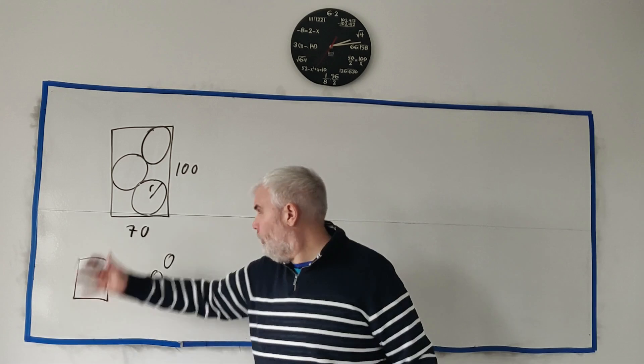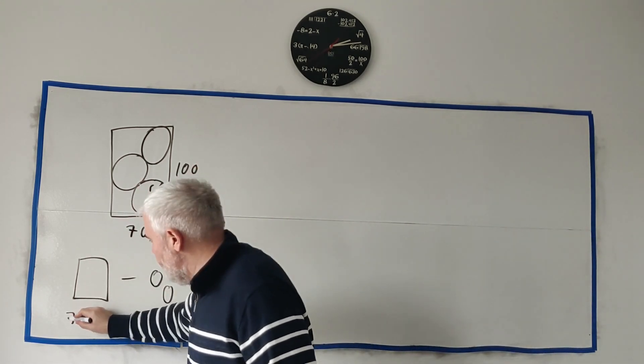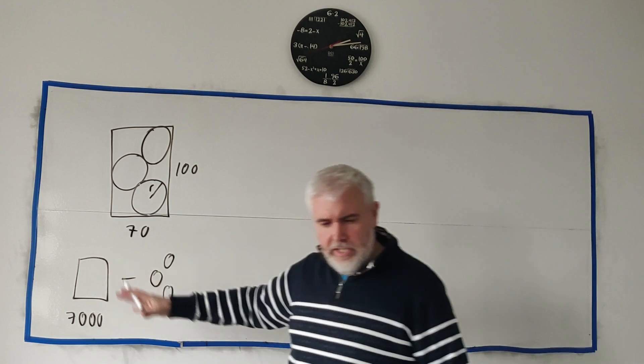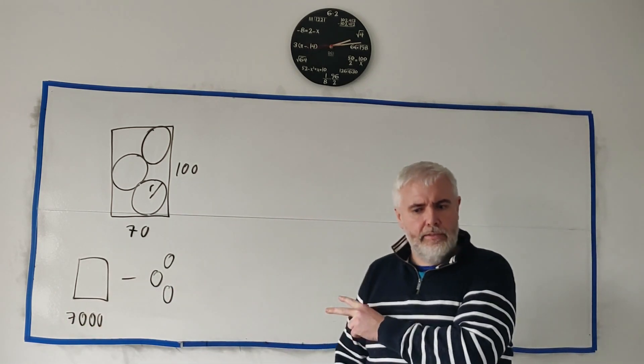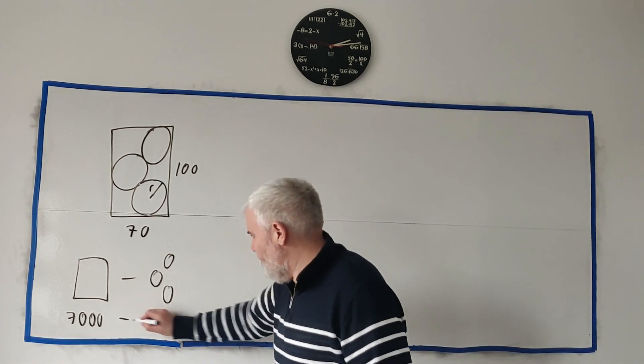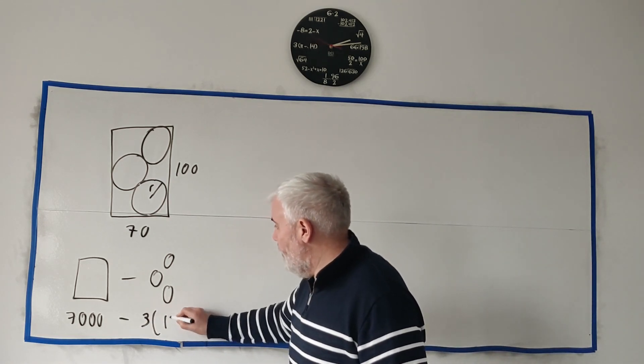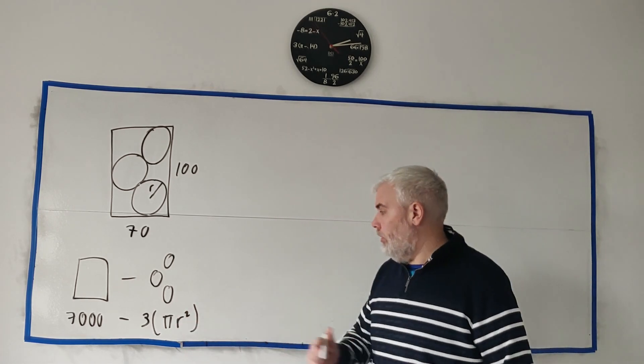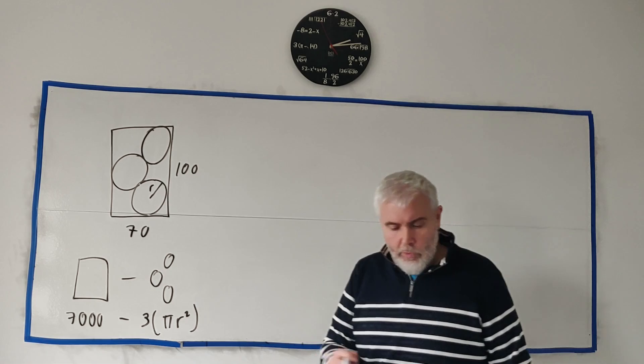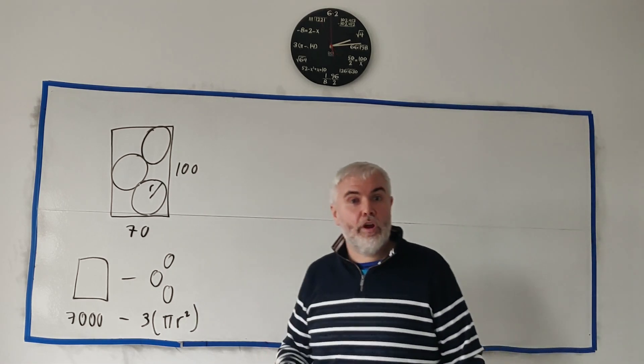So a rectangle, which is 70 times 100, that's 7,000. A very easy question to do. Take away three circles. And a circle is easy to do. That's minus 3 times pi r squared. So this question can be reduced down to what is r. So that's what we're going to focus on here. We have to try and find r.